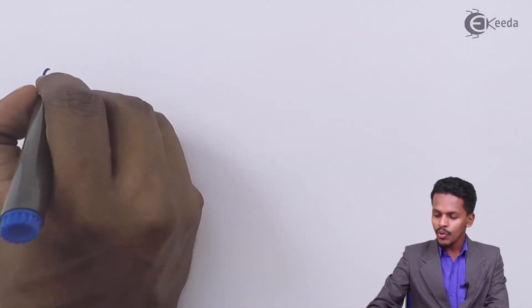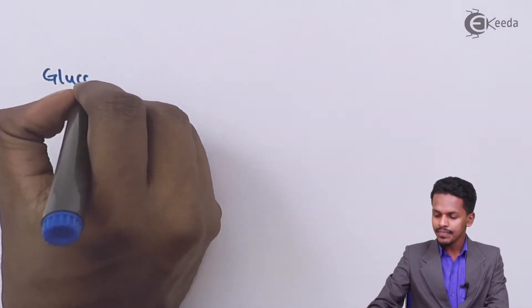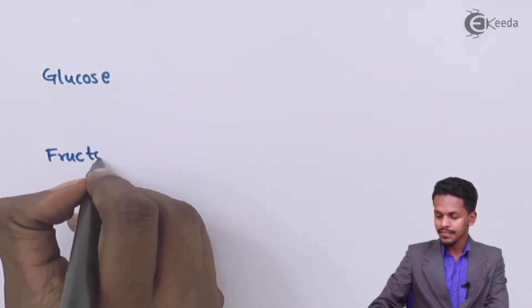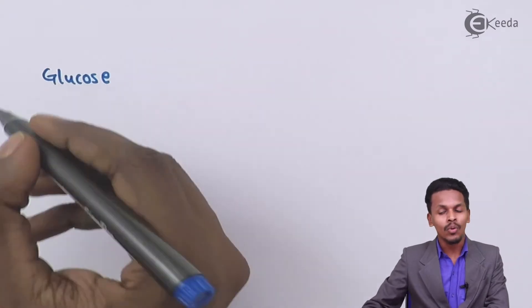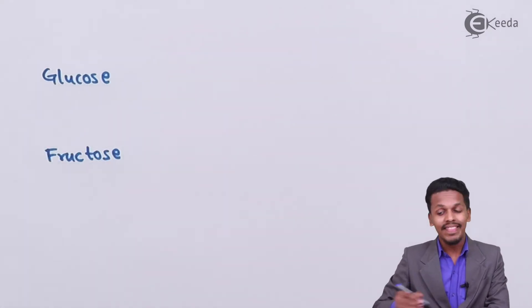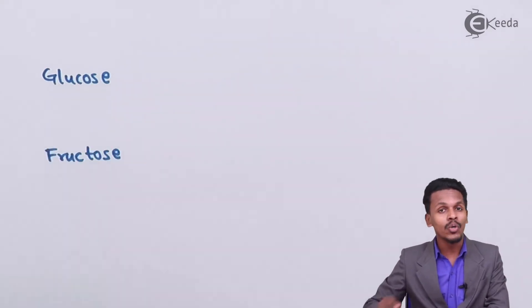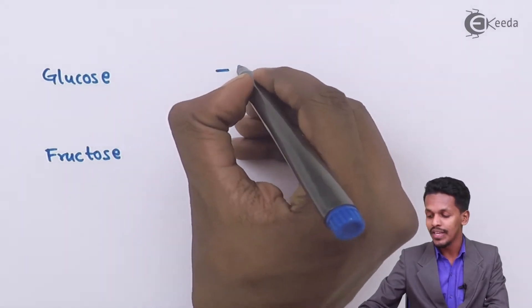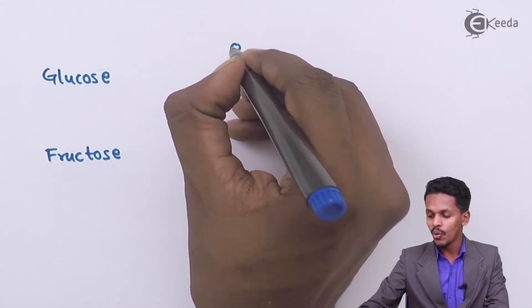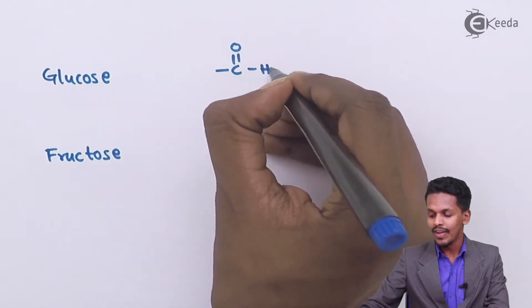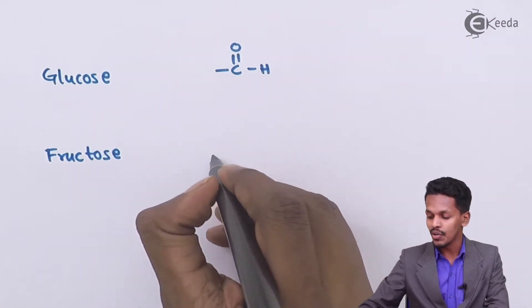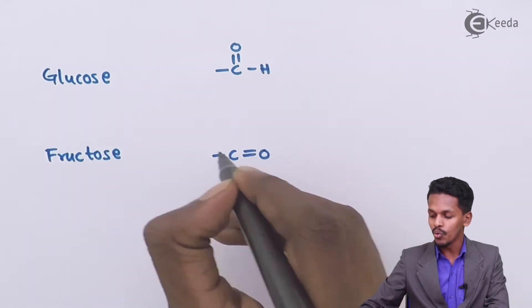Talking about sugars like glucose and fructose — these are known as monosaccharides. They are divided into two categories: glucose is a polyhydroxy aldehyde which consists of a C double bond O (carbonyl) group, while fructose is a polyhydroxy ketone which also consists of a C double bond O group.